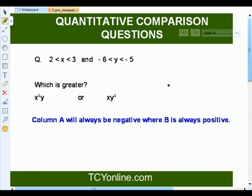Now, have a look at one quantitative comparison question. It says, x is lying between 2 and 3 while y is lying between negative 6 and negative 5. Which is greater? x to the power of 4 times y or x times y to the power of 4. Now, column A will be always negative while column B will be always positive. So, that means column B is greater than column A. So, x times y to the power of 4 will be greater than x to the power of 4 times y.